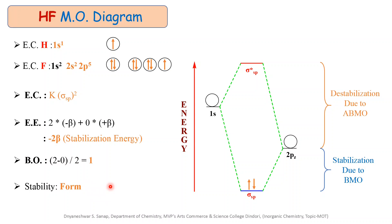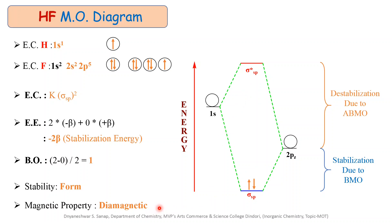The next important point is magnetic property. There is no unpaired electron in the bonding or antibonding molecular orbital, and that is why the hydrogen fluoride molecule is diamagnetic in nature. Thank you for watching.